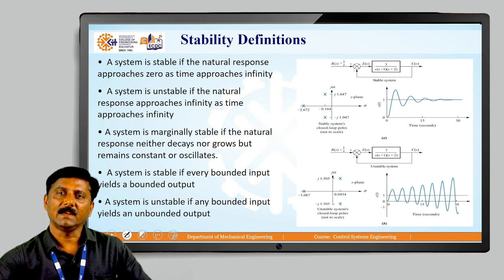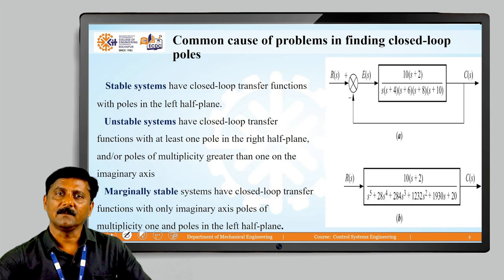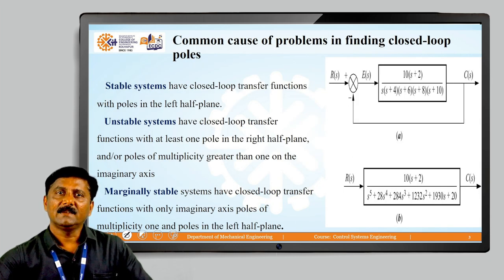For the second case, we see that in spite of a bounded input, the output is not bounded. This becomes the second way of representing system stability and instability. This is the BIBO — Bounded Input Bounded Output — definition of stability.